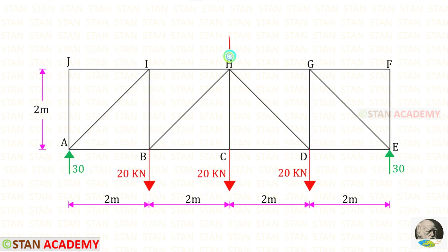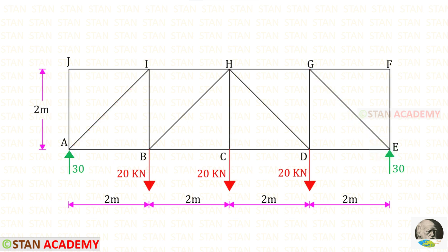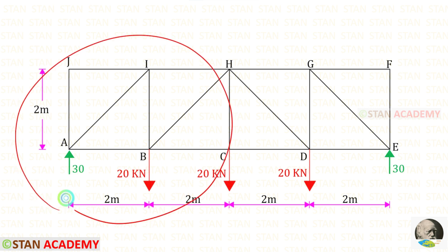We know that about HC this truss is symmetrical, so the values of member forces on the left side and on the right side will be the same. For example, the member forces for AJ and EF will be the same, and AI and GE will be the same. So there is no need to analyze the whole truss — we can take only the left half and do the analysis.